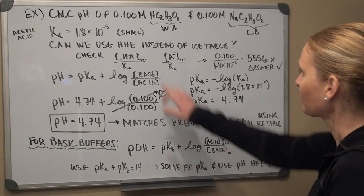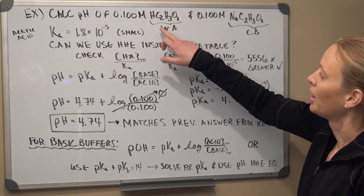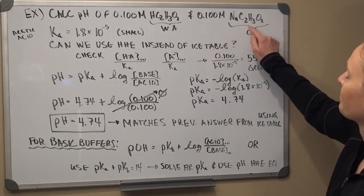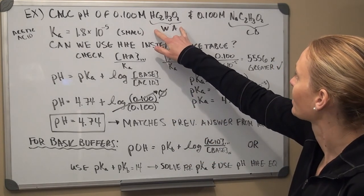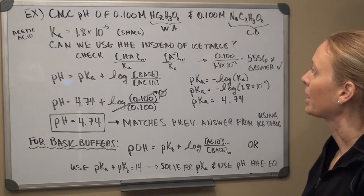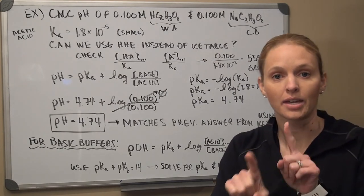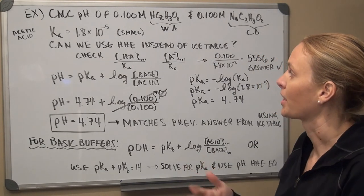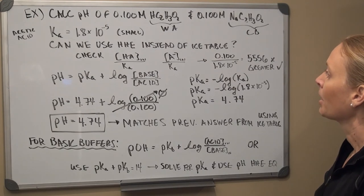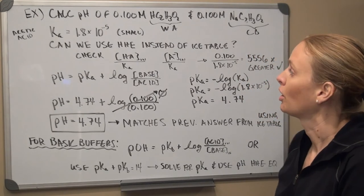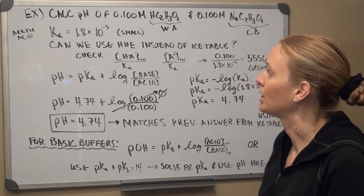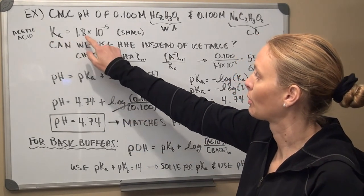The problem has 0.100 molar acetic acid, which is the weak acid, with 0.100 molar sodium acetate, which is the conjugate base salt. First we identify this as a buffer system. The Ka may be given; if not, look it up. For acetic acid, Ka is 1.8 × 10⁻⁵, which is a relatively small number.